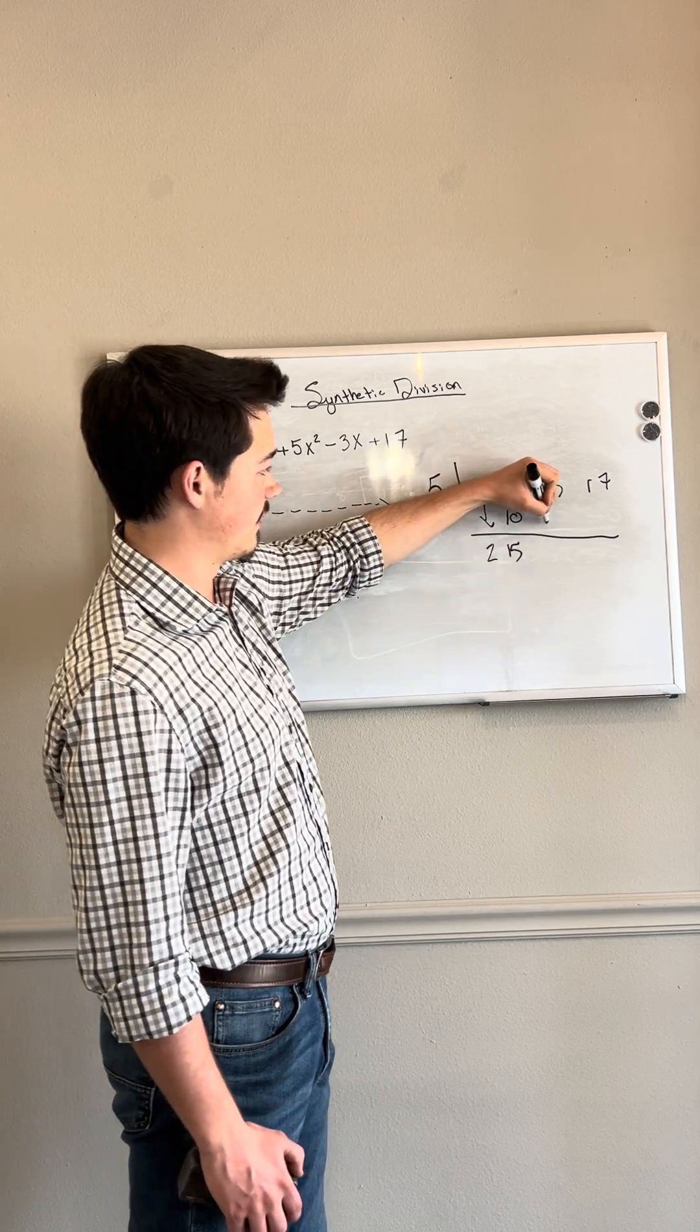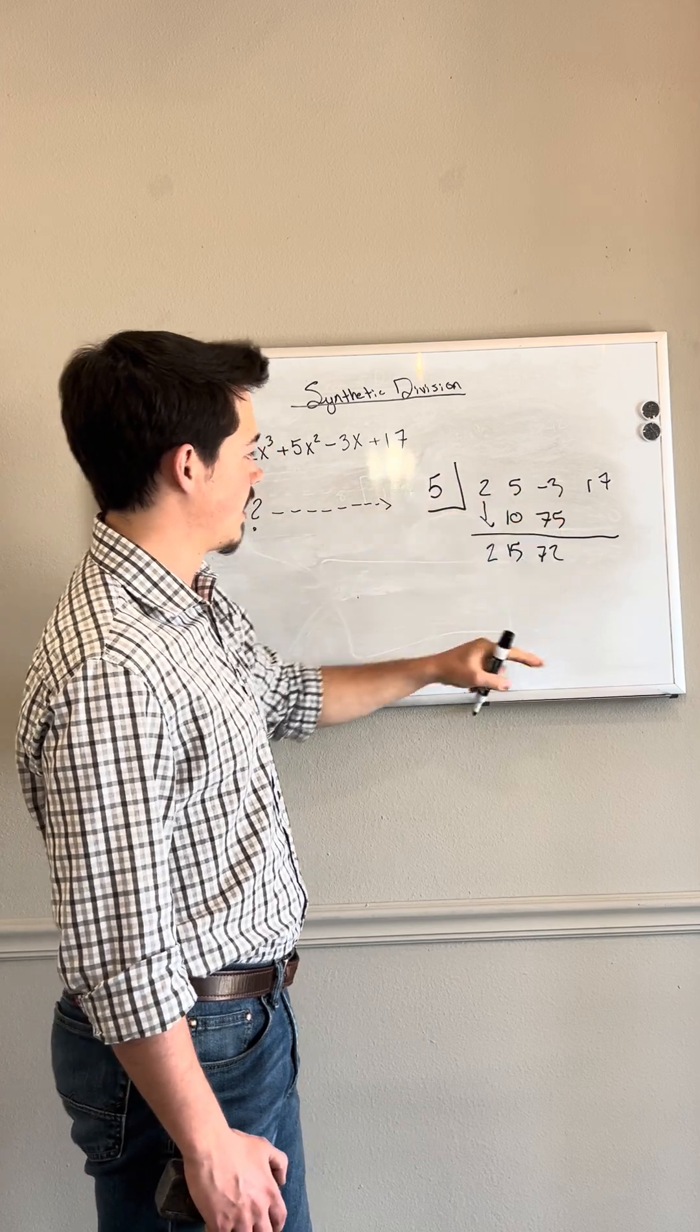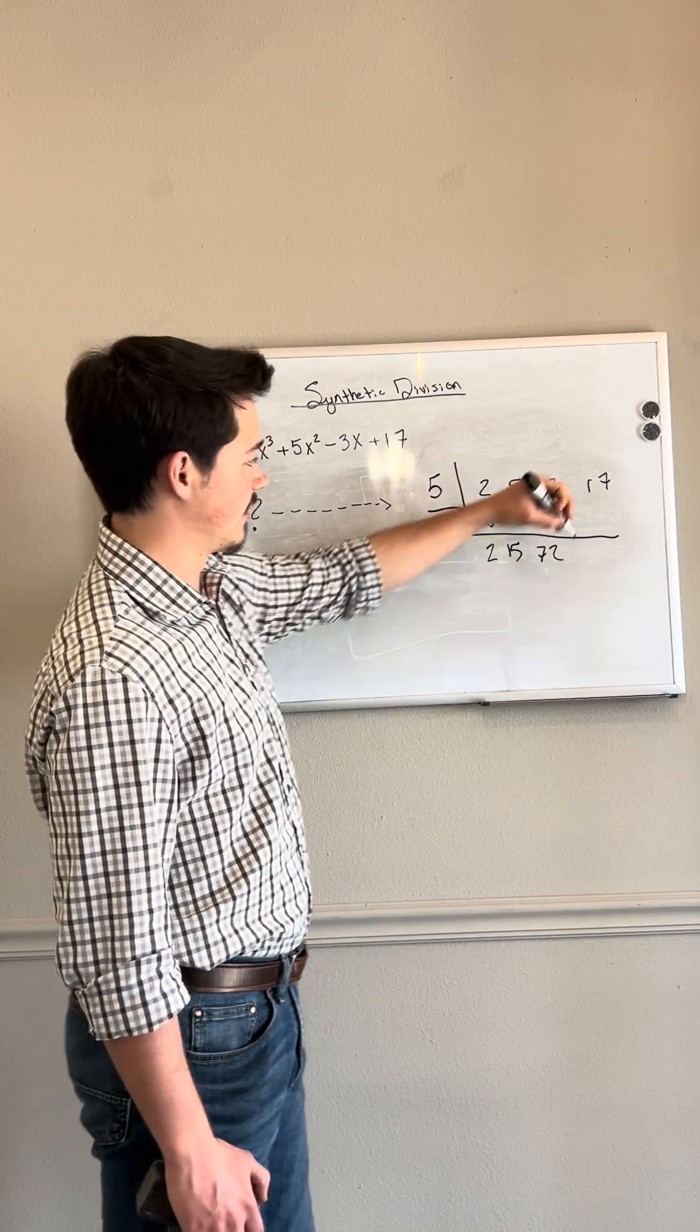Multiply it again by our c, giving us 75. Add it to negative 3, that gives us 72. Multiply it again by c, giving us 360.